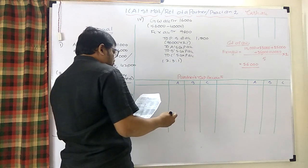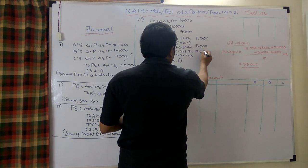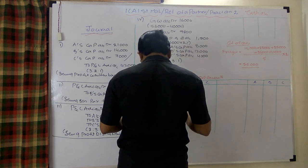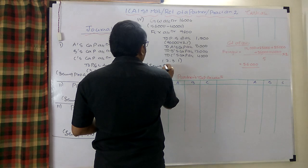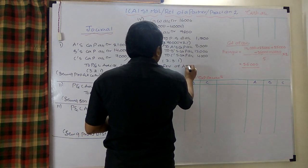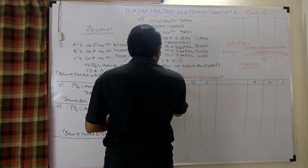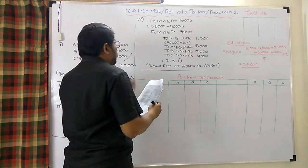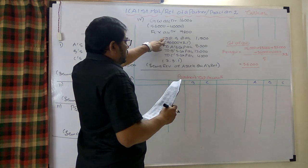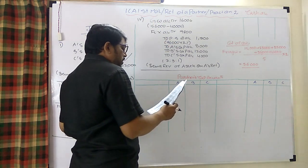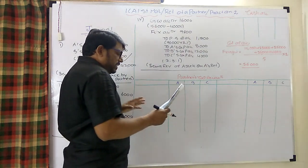Sharing the net revaluation result in ratio 2:3:1 gives credits of 8,000 to A, 12,000 to B, and 4,000 to C. Being revaluation of assets on A's retirement — increase in fixed assets and goodwill, reduced by provision for bad debts, net amount credited to partners in ratio 2:3:1.